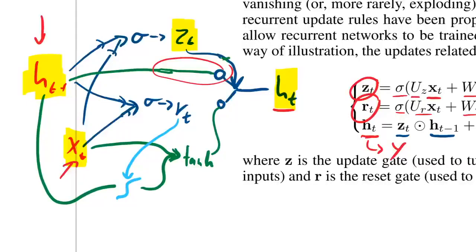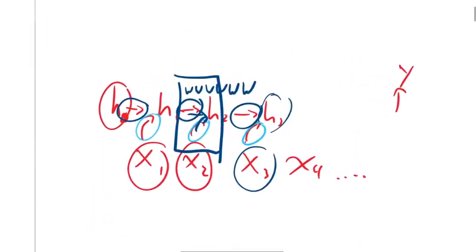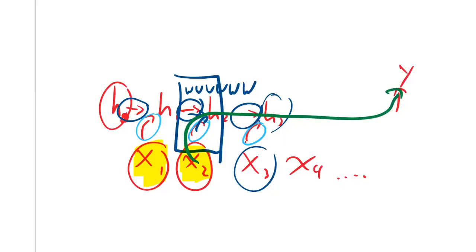This allows the cell to look at the hidden state — the accumulated information so far — and the current input, and decide: do I even want to update my hidden state? If not, it selects the old path and the next hidden state is exactly the same as the last. For example, in a spam detection task, a word like 'buy gold' might be really important to remember in the hidden state, since the only way information flows to the output Y is through the hidden states.